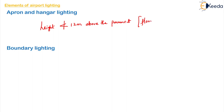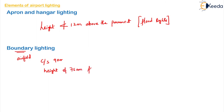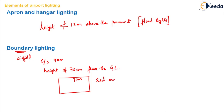It is recommended that floodlights should be placed at a height of not less than 12 meters above the pavement, and the type of lights used are floodlights. The next element is boundary lighting. The entire boundary of the airfield is provided with lights at a center-to-center distance of 90 meters and a height of about 75 centimeters from ground level. A fence is provided along the boundary, and the lights should be placed inside the fence at a distance of about 3 meters. The color used for boundary lighting is red.